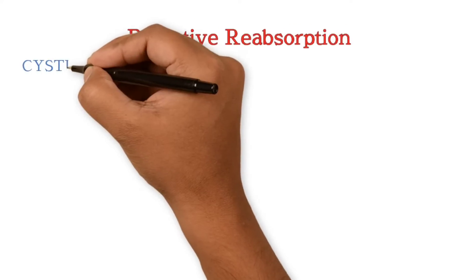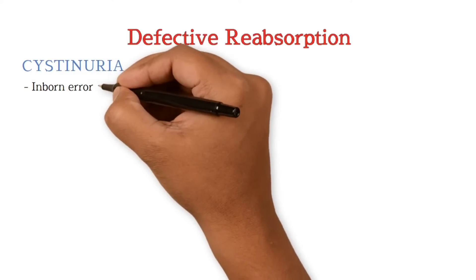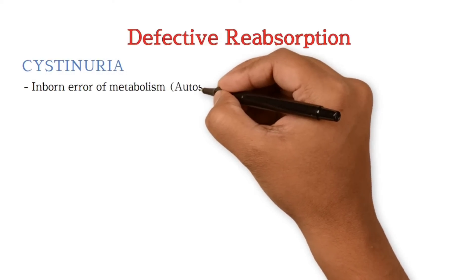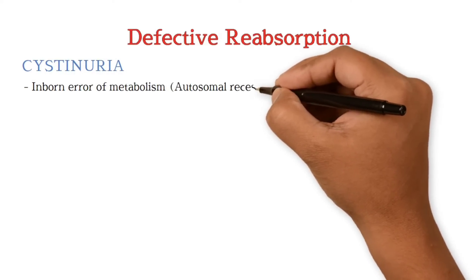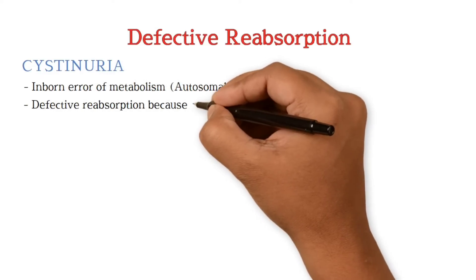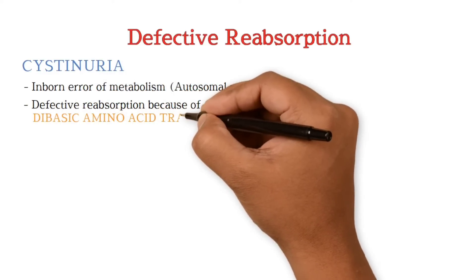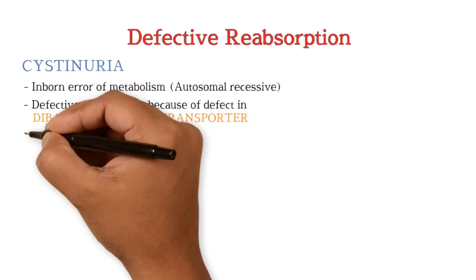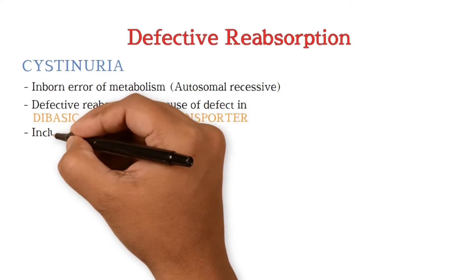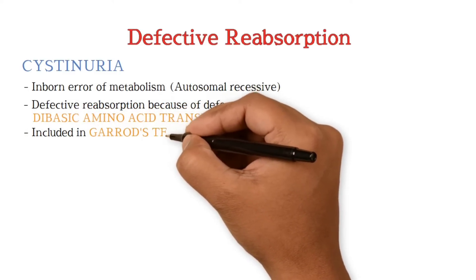First we will see defective reabsorption: cystinuria. It is an inborn error of metabolism and an autosomal recessive condition. It is caused by a defect in the dibasic amino acid transporter. Cystinuria is included in Garrod's tetrad.